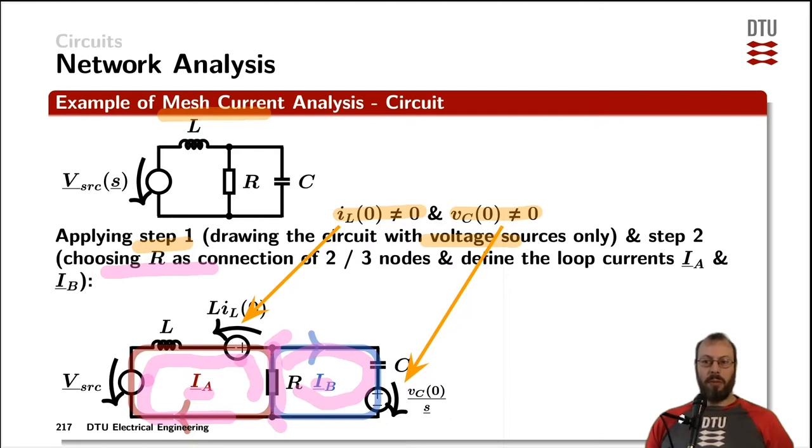Now in the third step of the mesh current analysis, we put all of the sources on one side of the equation. If we see how the current Ia is meeting the voltage sources flowing through here, it's meeting the V source in a negative way. So we can put it in a positive way over to the right hand side of the equation. And the same holds for the initial current in the inductor,